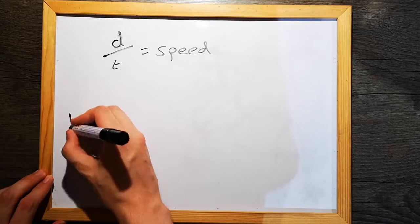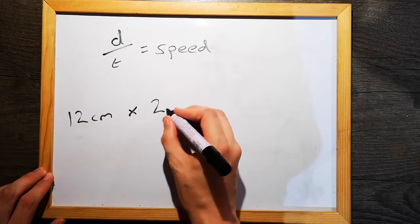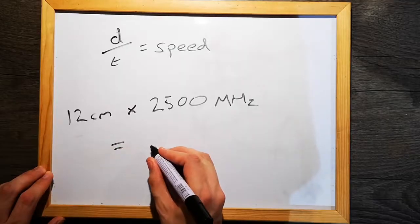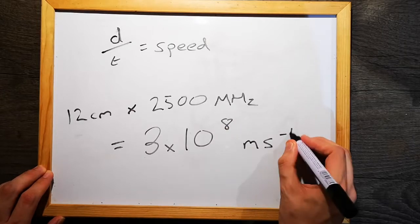Specifically, if we do this calculation of 12 centimeters, that's 0.12 meters, multiplied by 2,500 megahertz, that's 2.5 times 10 to the 9 reciprocal seconds, we get 3 times 10 to the 8 meters per second. If that number sounds familiar, it's because it's the speed of light.